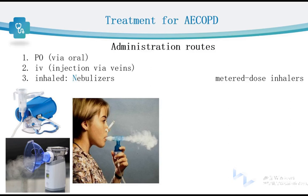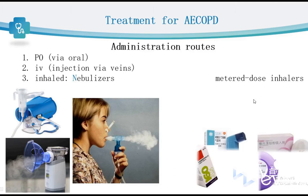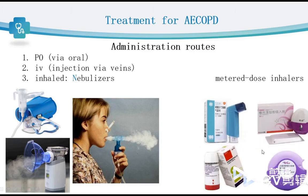In general, we choose one nebulizer device for adults and another device for children or patients in a coma. Another type of inhaler is called a metered dose inhaler, as shown in the picture. The drugs are stored in the device with an accurate dose delivered with each inhalation.